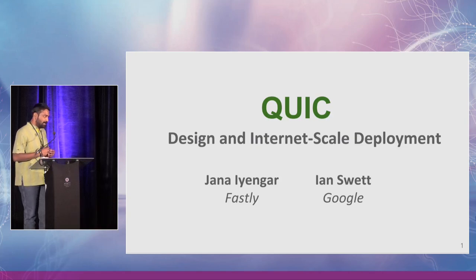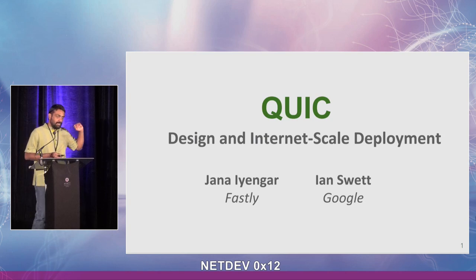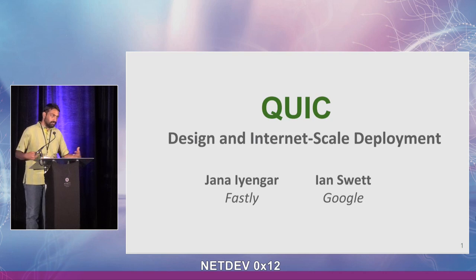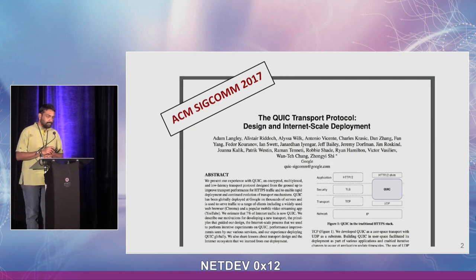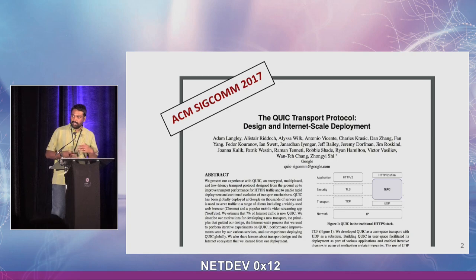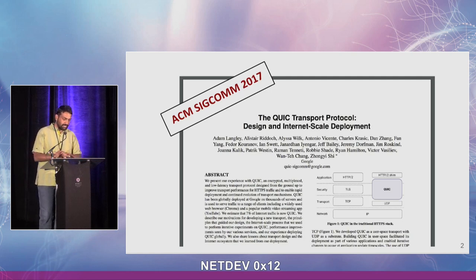I'm going to talk about CPU utilization and problems that we faced scaling QUIC on Linux. My affiliation is Fastly, but I used to be at Google. A lot of the stuff I'm going to talk about are experiences we had while deploying QUIC at Google. There's a fairly detailed paper we published at SIGCOMM last year. We'll touch upon some of these things, but we won't get into the details of performance evaluation outside of CPU here.